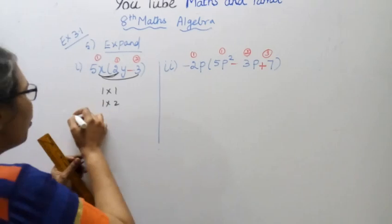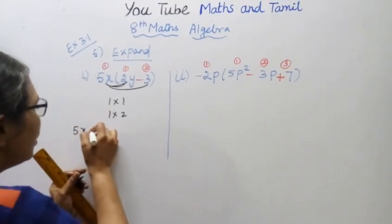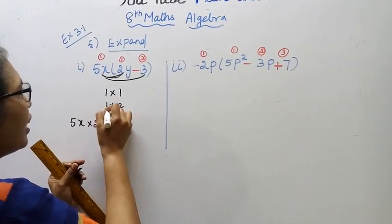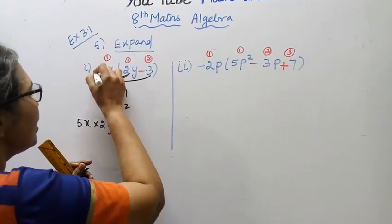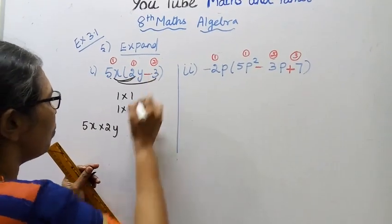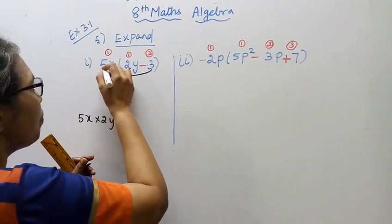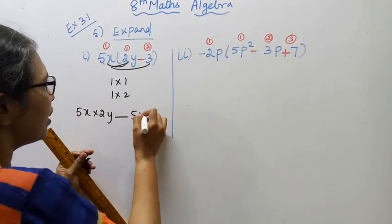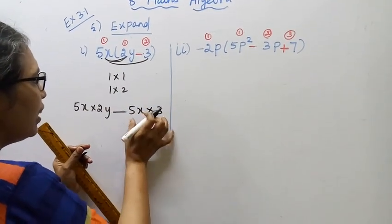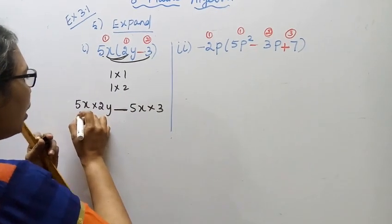5x into 2y. 1 into 2, plus minus minus. 5x into 3. This is the same. Minus multiply.